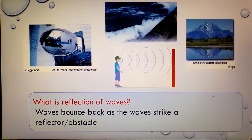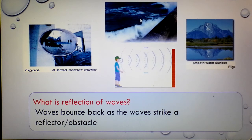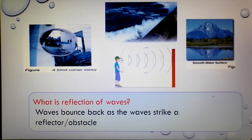What is meant by Reflected Waves? Observe the picture given. This picture shows sea water waves bouncing back when hitting a retention wall of big rock. You can also observe an image formed in a blind corner mirror due to the light wave that bounces back.